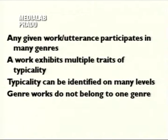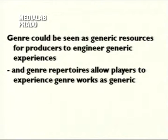Here are some Wittgensteinian points found in the work of Frow and to some extent Altman, which I expect most modern genre theorists would concur with — a reaction against monolithic ideas of genre. Any given work participates in many genres at once, and exhibits multiple traits of typicality also at once. Typicality can be identified on many levels, which means that genre works do not belong to just one genre. Genre could be seen as generic resources for producers to engineer generic experiences, which means that genre repertoires allow players to experience genre works as generic. If they don't know what's going on, they won't get the experience the designer is going for.